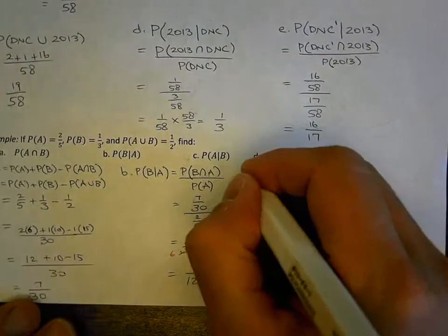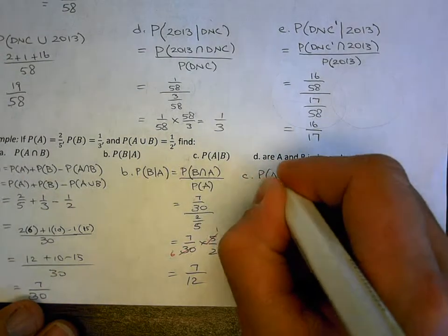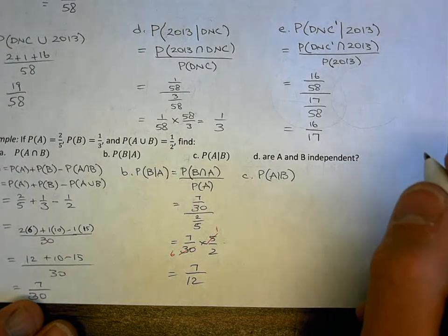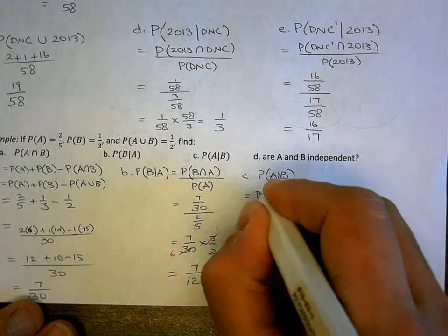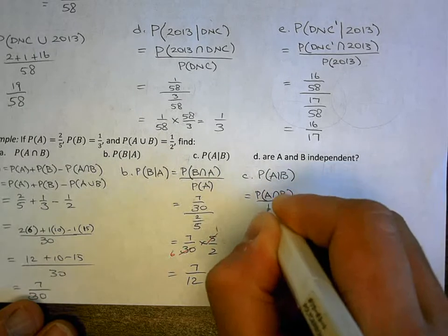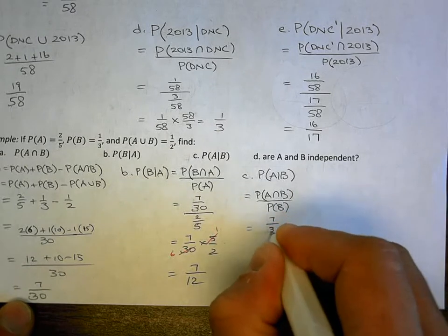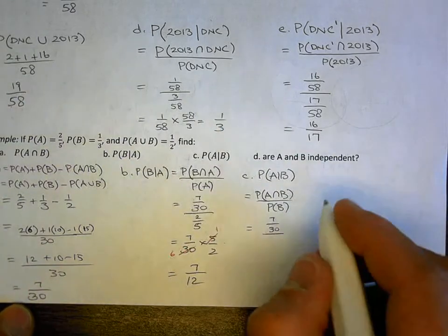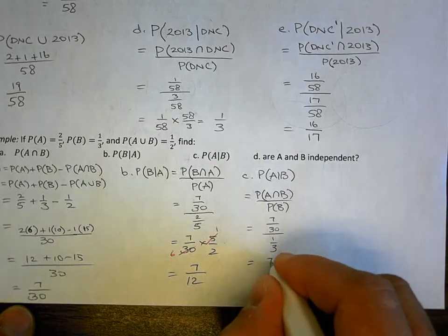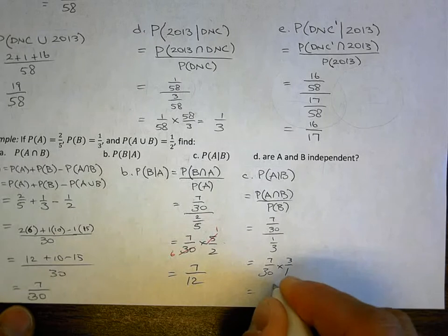Part C: what's the probability of A given B? P(A | B) = P(A ∩ B) over P(B). So that's 7/30 divided by 1/3, which is 7/30 times 3/1, giving me 7/10.